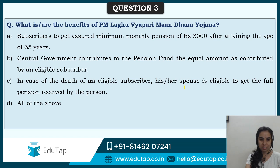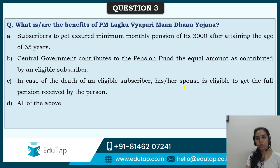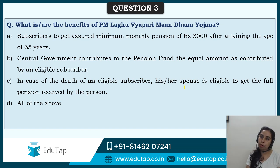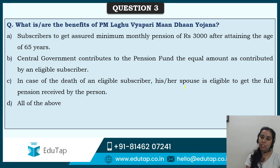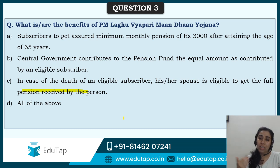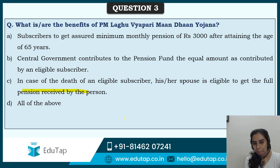Moving to Question 3, again related to the same scheme. What are the benefits of PM Laghu Vyapari Mandhan Yojana? Option A: subscribers get a monthly minimum assured pension of Rs. 3000 after attaining the age of 65 years. Option B: the central government contributes an equal amount to the pension fund as contributed by an eligible subscriber. Option C: in case of the death of an eligible subscriber, his or her spouse is eligible to get the full pension received by the person. Option D: all of the above. Some twists have been added — let's see if you can spot them.